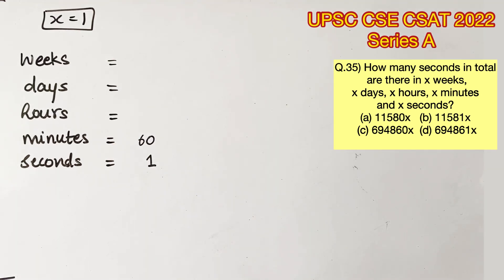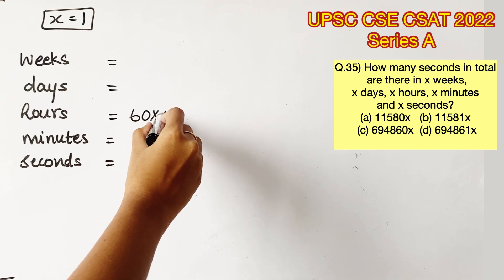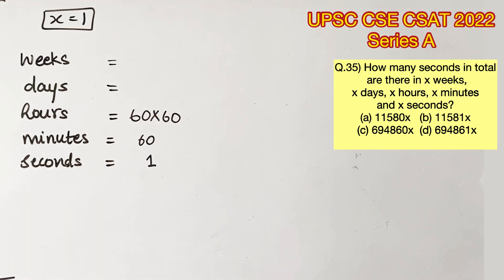How many seconds are there in 1 hour? Which is 60 into 60, 3600. Because there is 60 minutes and for every minute there is 60 seconds.